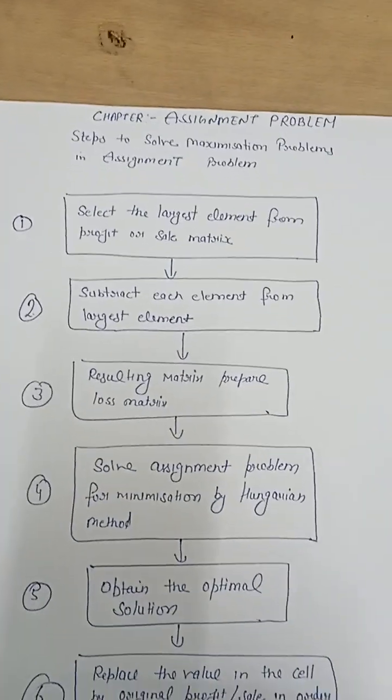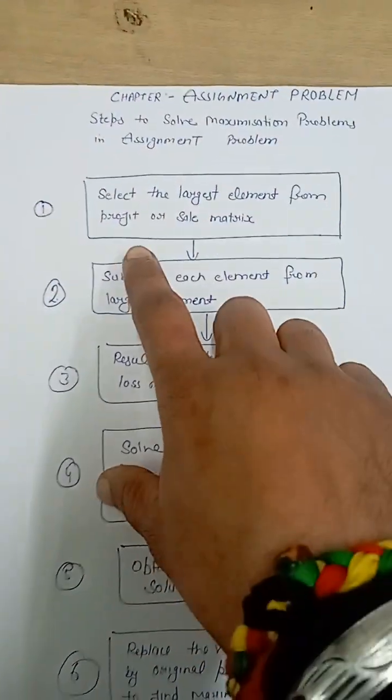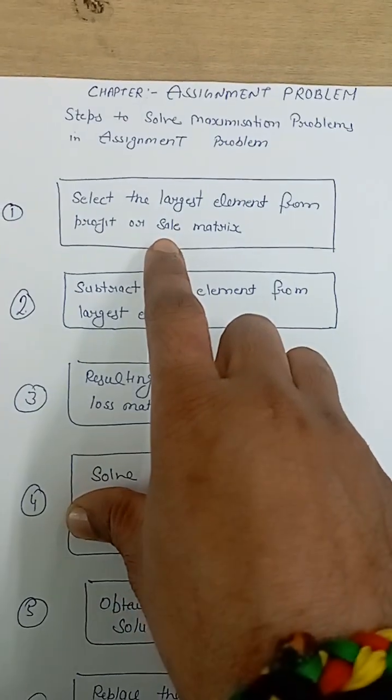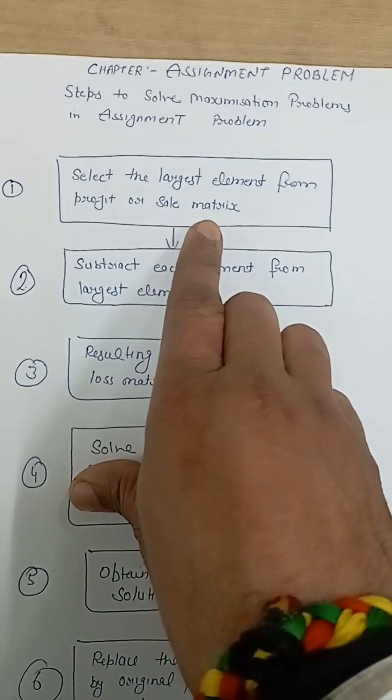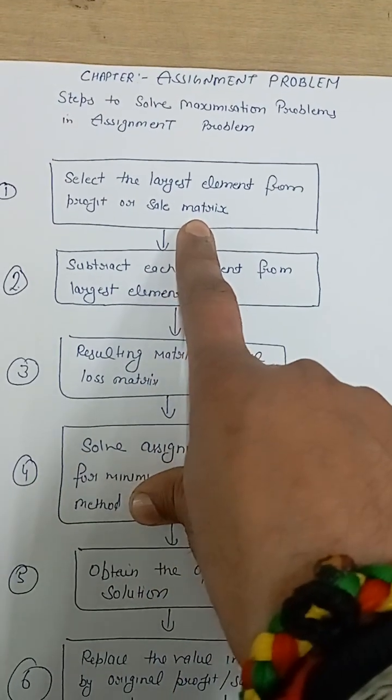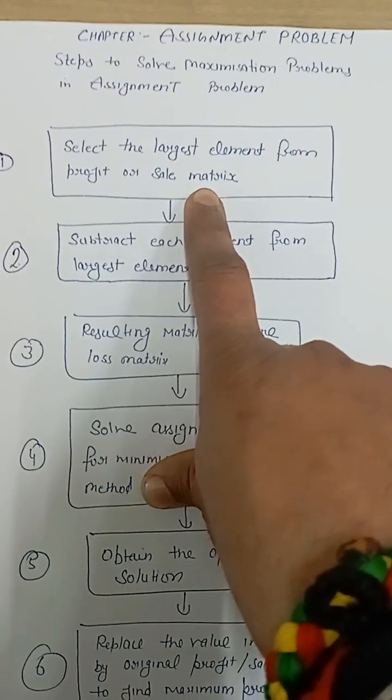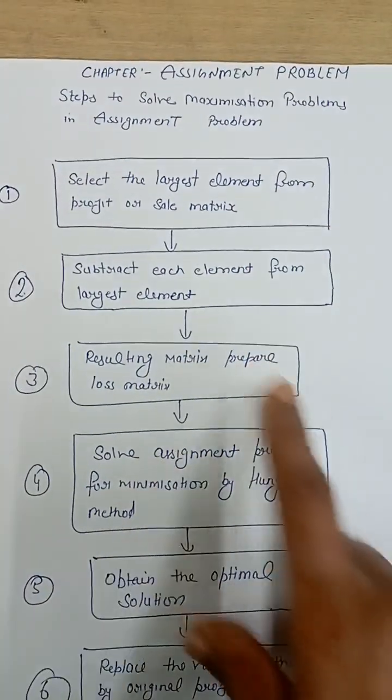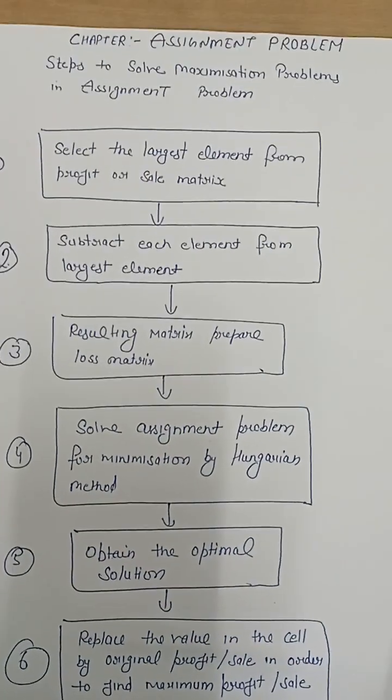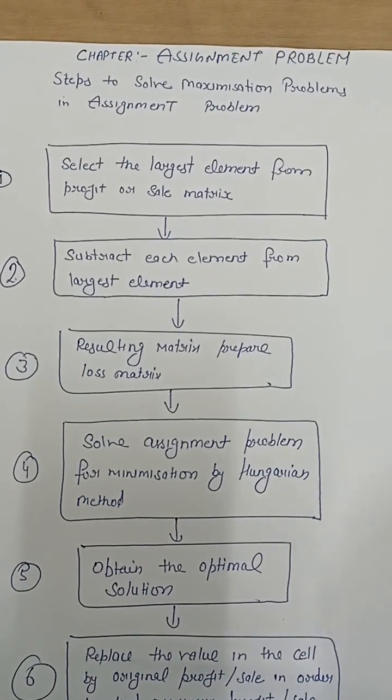Now we discuss one by one every step. The first step is select the largest element from the profit or sale matrix. Means, in this first step, if the questions are given in profit, sales, or revenue, then in that particular matrix, we select the largest value.